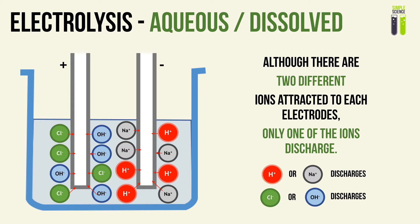So how do we determine which ion will discharge? We are going to set up a cheat sheet — basically a table of rules. From this table of rules you will memorize, you will be able to solve all electrolysis questions.